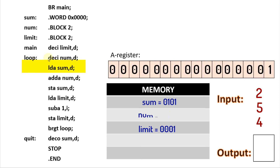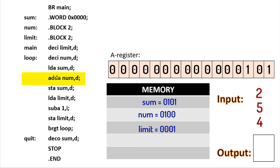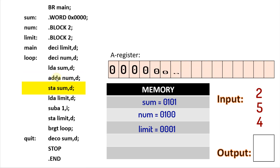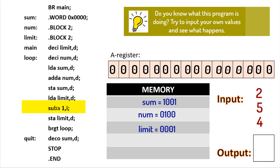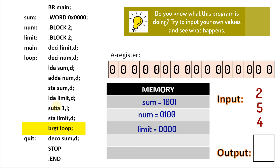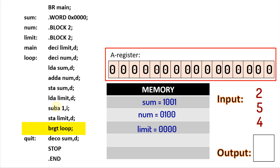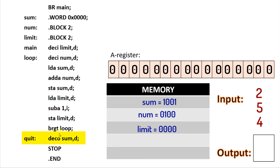We then continue with our program from the memory address loop. We input another number — let's input four. We load sum into the accumulator, add the value in num to the accumulator, and store whatever's in the accumulator to sum. We load the limit to the accumulator, subtract one from the limit, and store what's in the accumulator in the variable limit. Then we branch to loop if whatever's in our accumulator is greater than zero. We know there is a zero in the accumulator; zero is not greater than zero, so we move to the next instruction. We then output sum and stop the program.